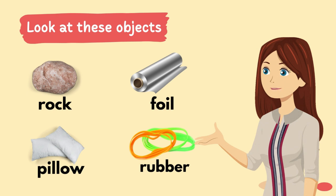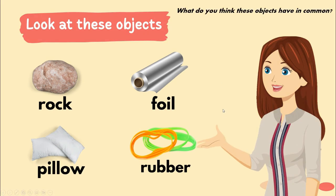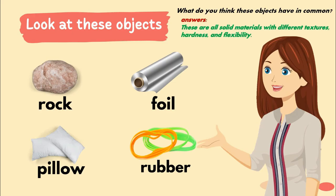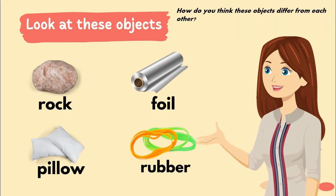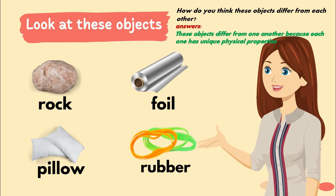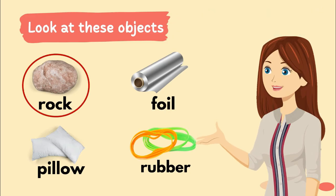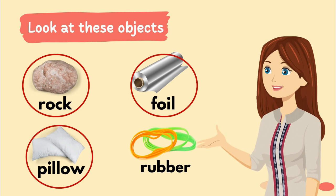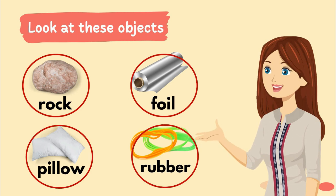Look at these objects. What do you think these objects have in common? You're right. These are all solid materials with different textures, hardness, and flexibility. How do you think these objects differ from each other? You're right. These objects differ from one another because each one has unique physical properties. Rock is hard and rigid. Foil is shiny and flexible. Pillow is very soft and rubber is stretchy and flexible.